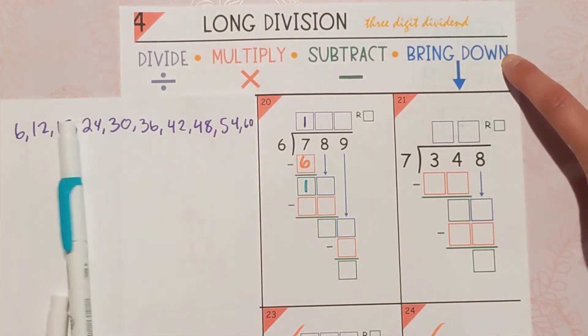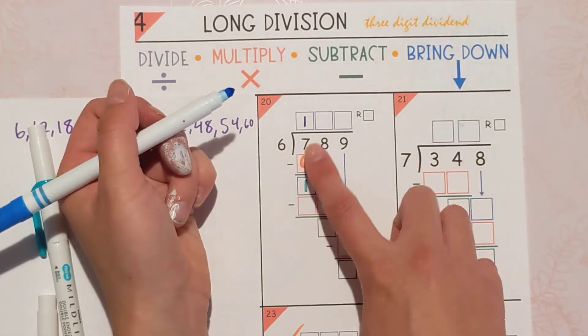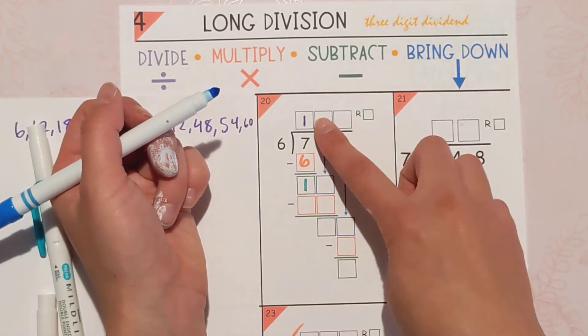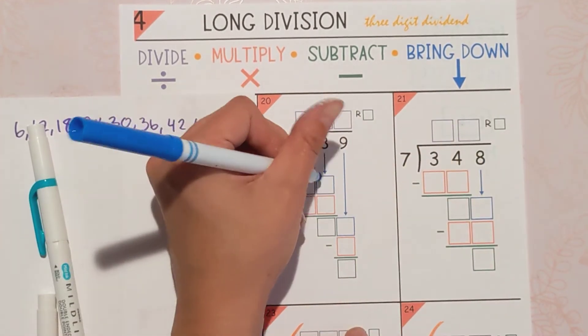Now we're going to bring down the next digit, because we used the 7. We have some left over. We'll keep it. But we're going to go ahead and bring our next digit down, which is an 8.